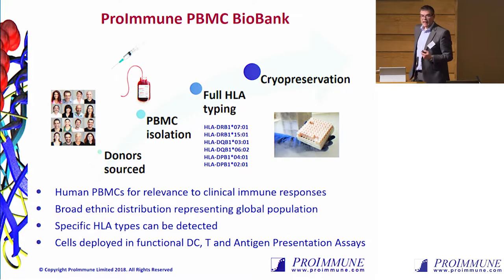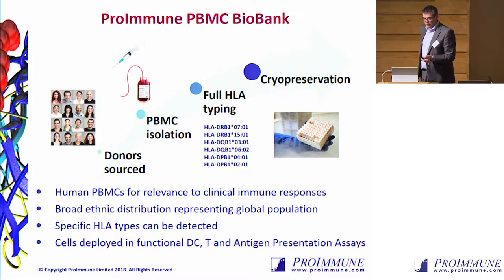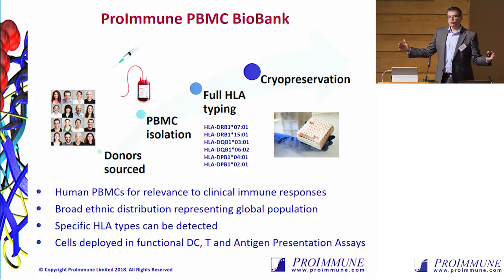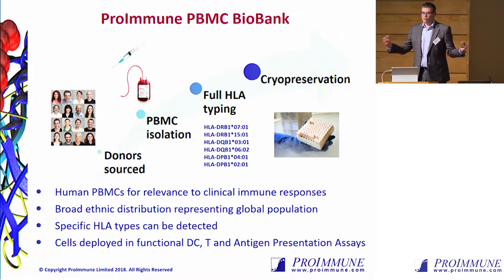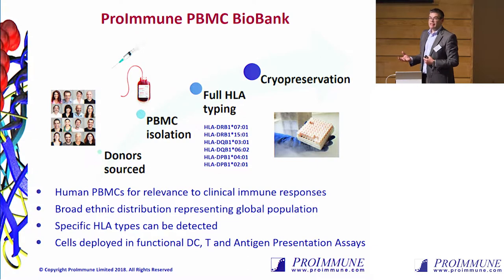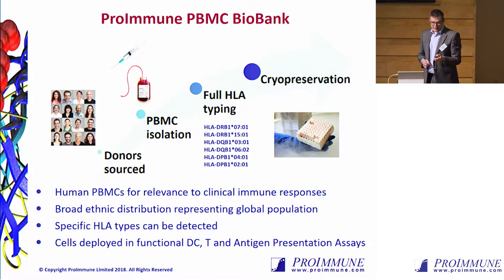At ProImmune we're already experts at a number of these different tools. Many of the tools I'm going to be talking about use a biobank — we use healthy donors sourced from the UK population, and we HLA type all the donors. This gives us a very broad characterization with regards to HLA type, so we can select donors with a broad global distribution of different MHC types. We can also specifically select donors of particular HLA phenotypes — for example, where there might be a particular interest in an HLA type associated with a disease such as autoimmunity.